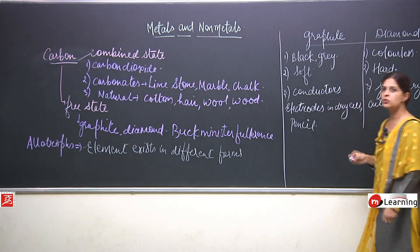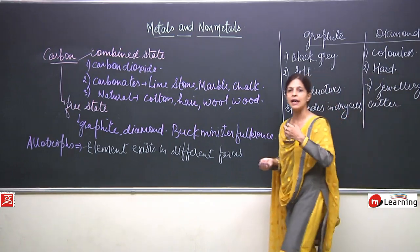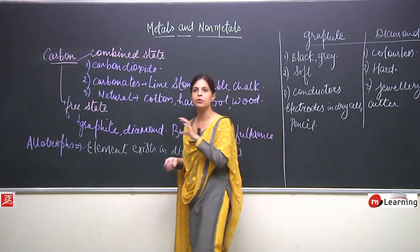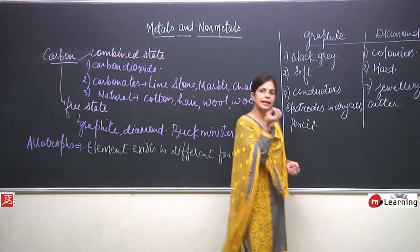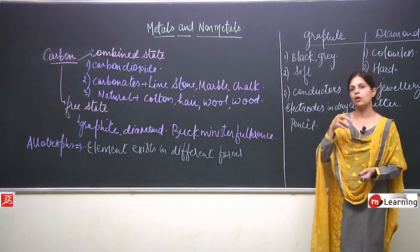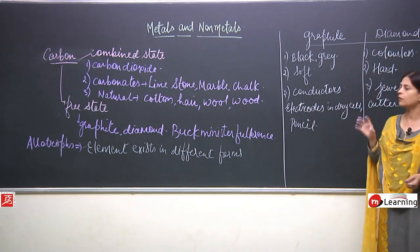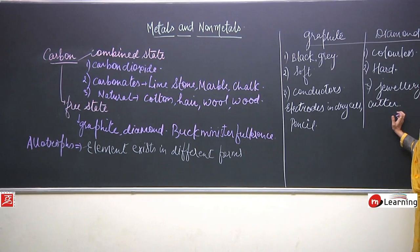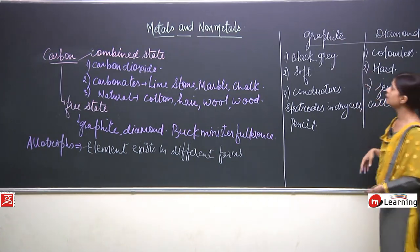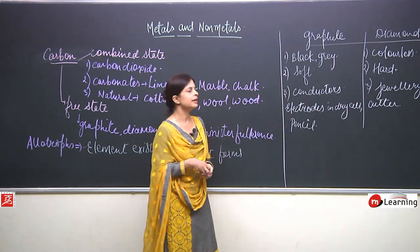Diamond is also used as a cutter — to cut glass, since it is harder than glass. It is even used by eye surgeons to remove cataracts from the eye. They have a very sharp knife with a diamond tip in a particular shape, and this pointed part is used to perform the operation. So these are the different characteristics that graphite and diamond exhibit.